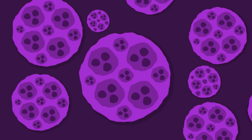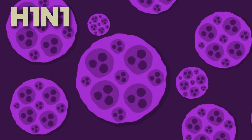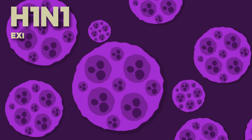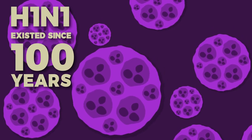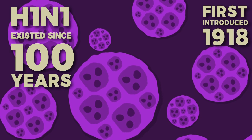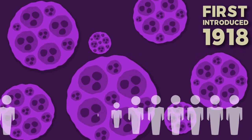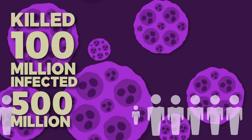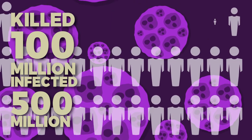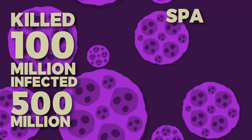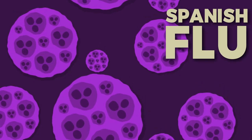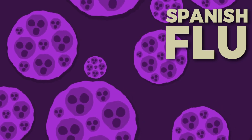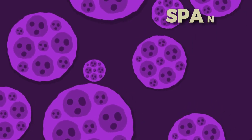Swine flu or H1N1 was not first introduced to humans in 2009 — it has been in existence for almost 100 years. The first H1N1 outbreak happened in 1918, causing 50 to 100 million human deaths worldwide and infecting 500 million people, but it had a different name: the Spanish flu. Since then the virus has existed amongst us, but until 2009 it was not that serious.